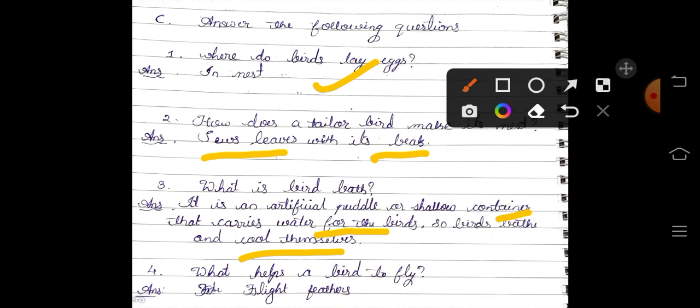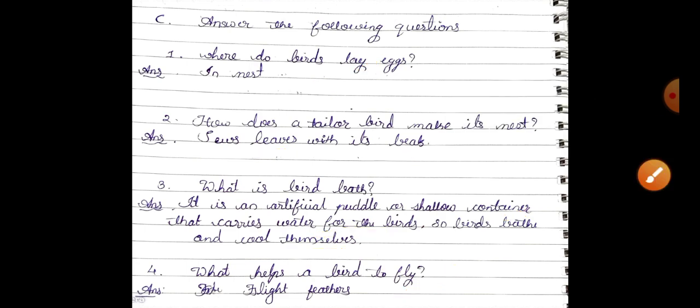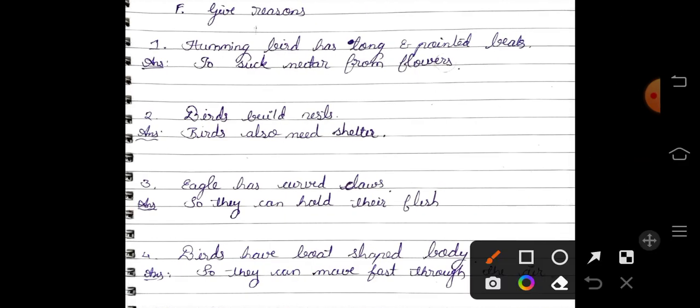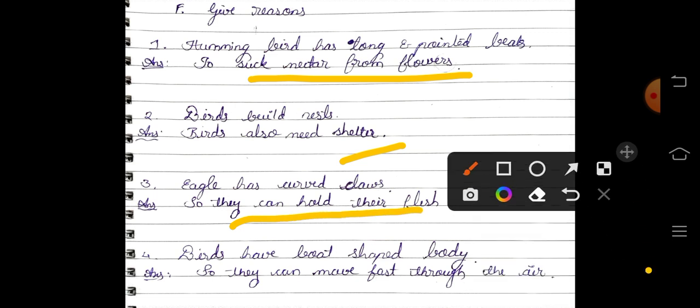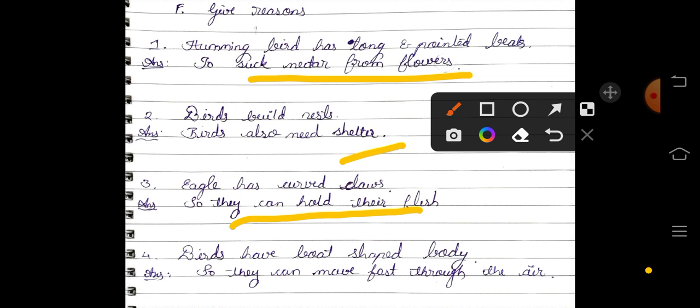Give reasons. Hummingbird has a long and pointed beak, why? Because by being long and pointed, they can suck the nectar from flowers. Birds build nests? Yes, birds also need shelter like us, that's why they build a nest for them. Eagle has curved claws? Yes, so they can hold their flesh very easily. Birds have boat-shaped body so they can move fast through the air. So here is this chapter completed.